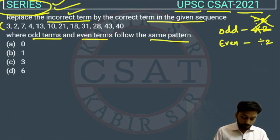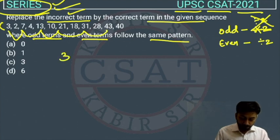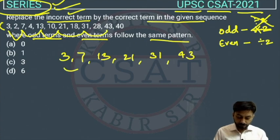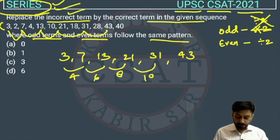The odd position numbers are 3, 7, 13, 21, 31, 43. There are two series in this given series. One is this odd series, so we will see the pattern. Let's find out the difference. The difference is 4 here, and the difference here is 6, then 8, 10, and 12.